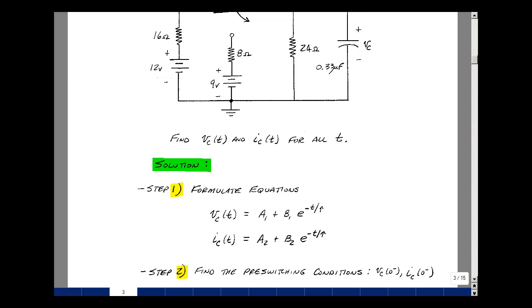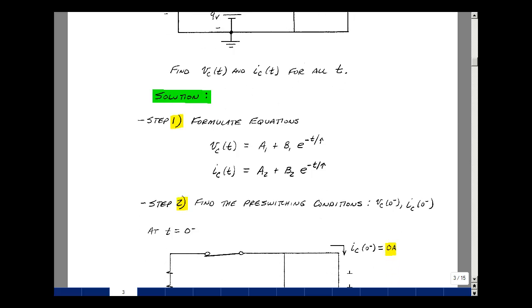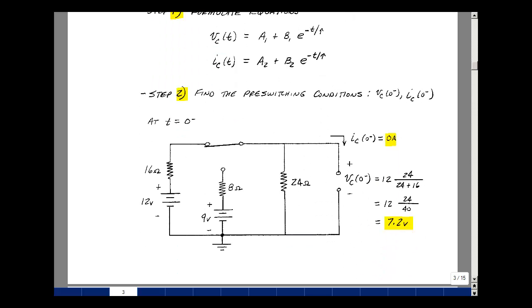The second step in our algorithm is to find the pre-switching conditions. Now the assumption here is that the switch has been in this state for a long time. The capacitor has reached steady state, so it looks like an open circuit, and then we're going to solve for the variables of interest.